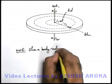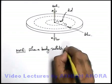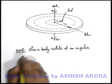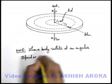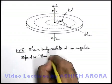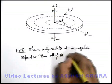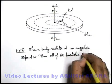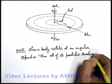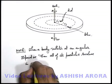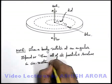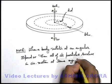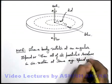When a body rotates at an angular speed ω, then all of its particles revolve in circular motion at the same angular speed ω.